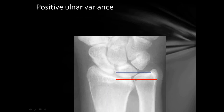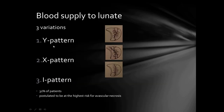Here is another case: we draw two lines, one from the distal articular surface of the ulna and another from the lunate articular facet of the distal radius. The ulnar tangent is more distal compared to the radial tangent, so there is positive ulnar variance. There are normally three types of blood supply pattern to the lunate.